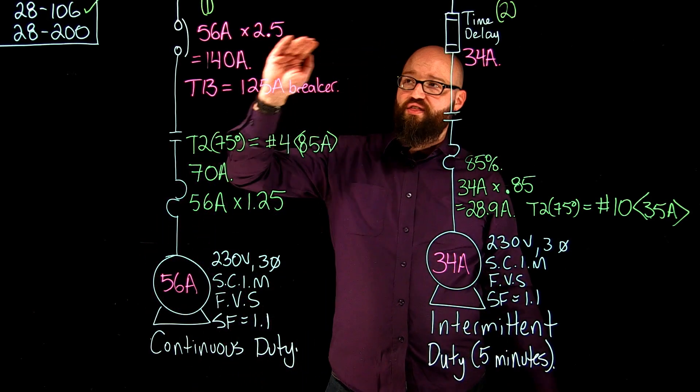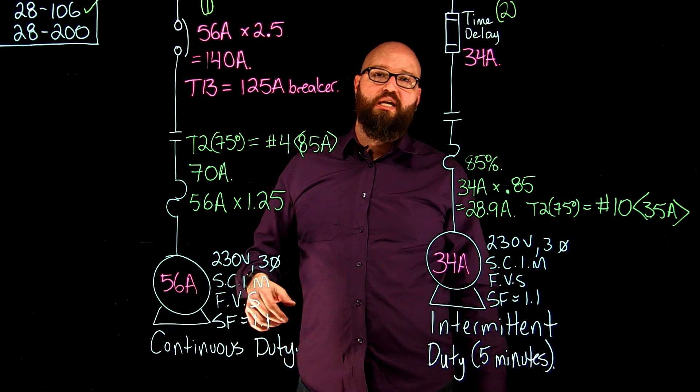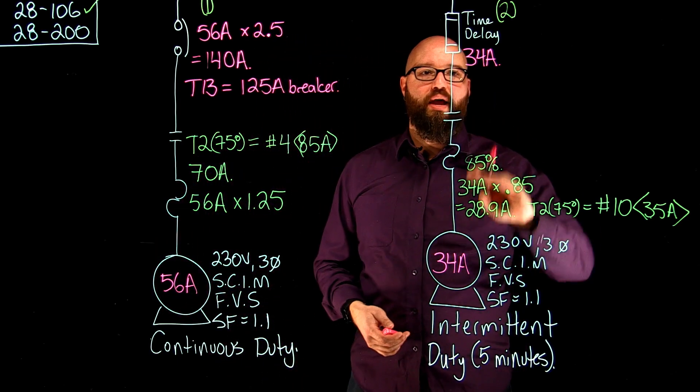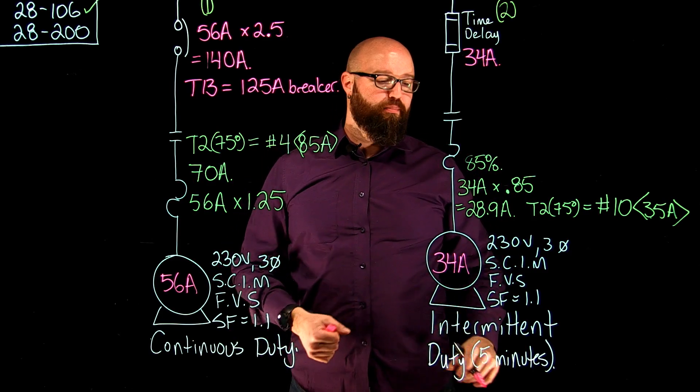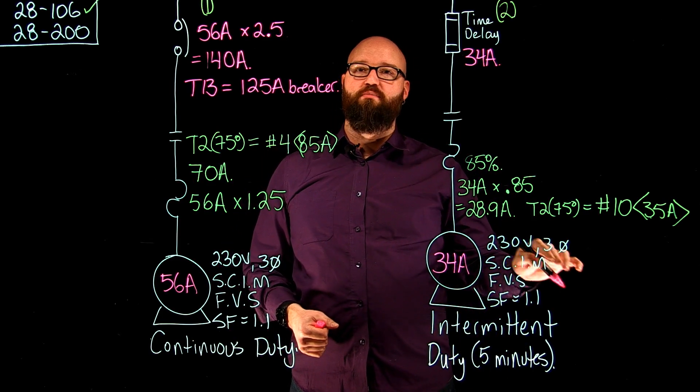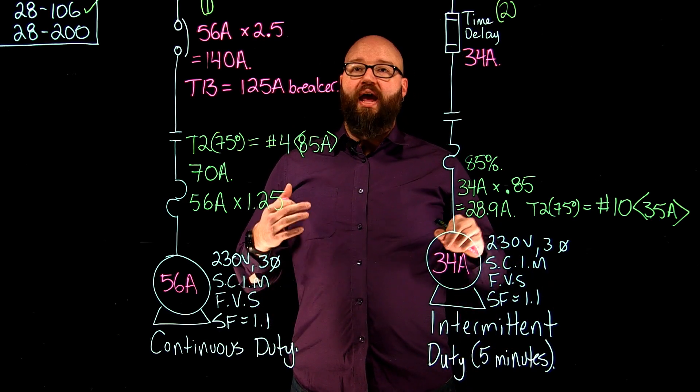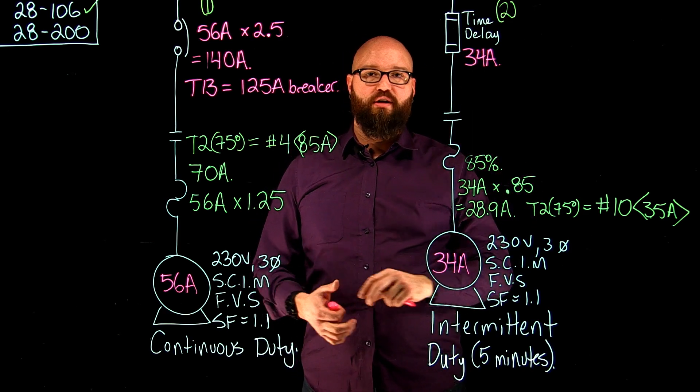So that table 29 value is our multiplier, which we cannot exceed. Now we move on to our intermittent duty motor here, where we have our 34 amp FLA. And to keep it simple, we went with a squirrel cage induction motor, full voltage start. And we have our time delay fuse that's protecting our motor branch circuit.